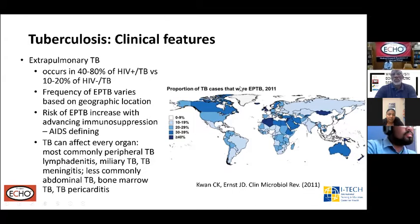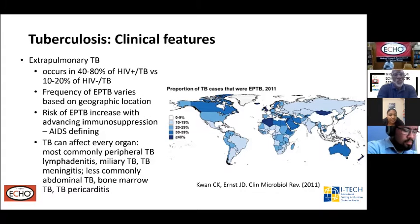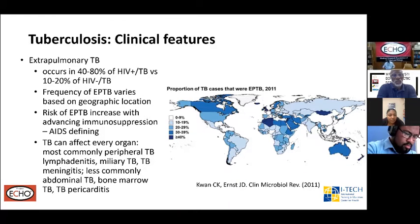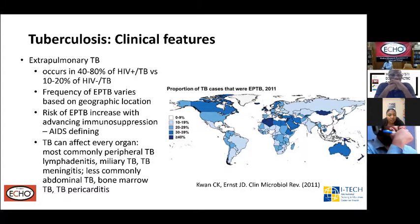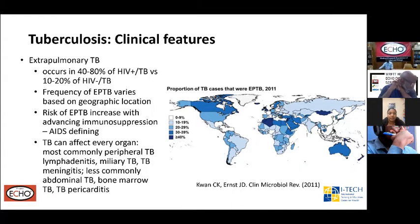Extra-pulmonary TB occurs in approximately 40 to 80% of HIV-positive TB co-infected persons, versus about a quarter of that in HIV-negative persons. There is a wide geographic distribution — we see a lot in Canada, North Africa, parts of Asia, and Australia, but less so in South America, Russia, and China. The risk of developing extra-pulmonary TB increases with advancing immunosuppression.